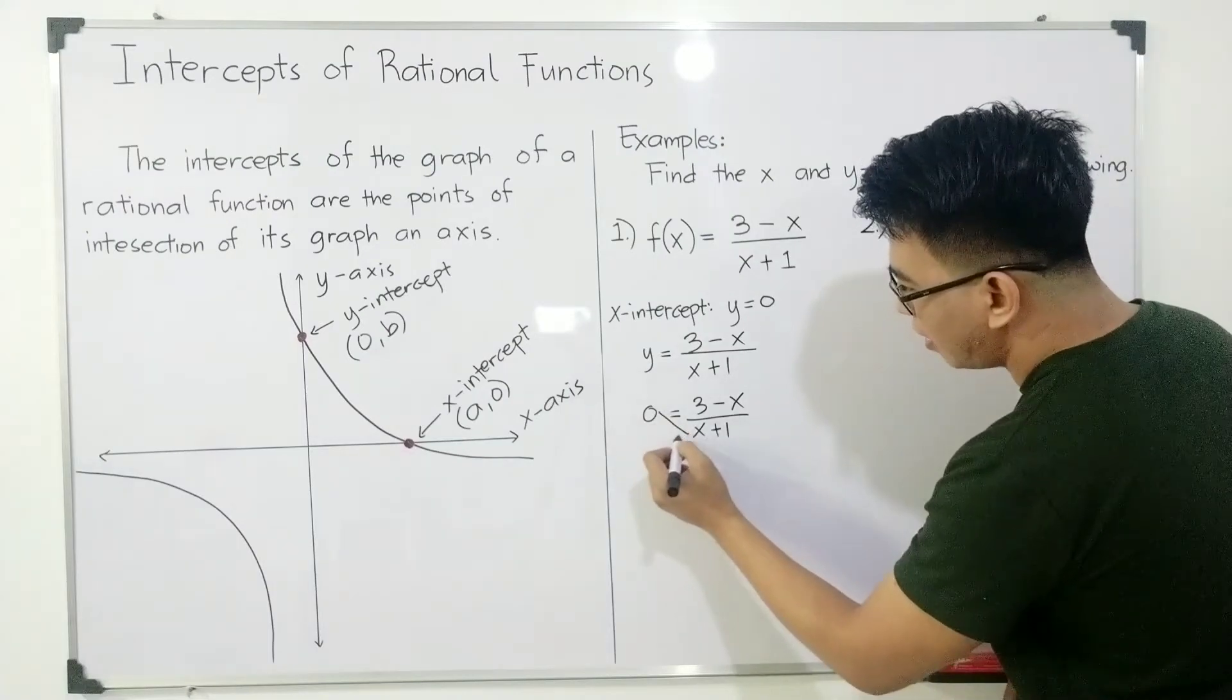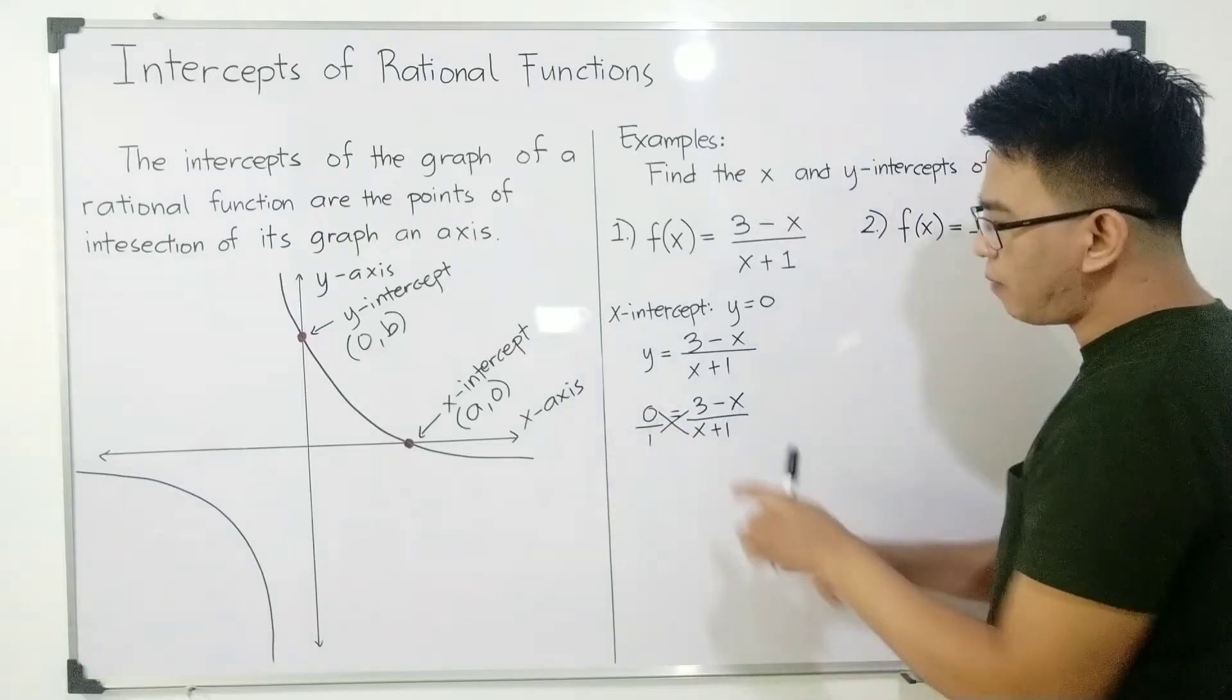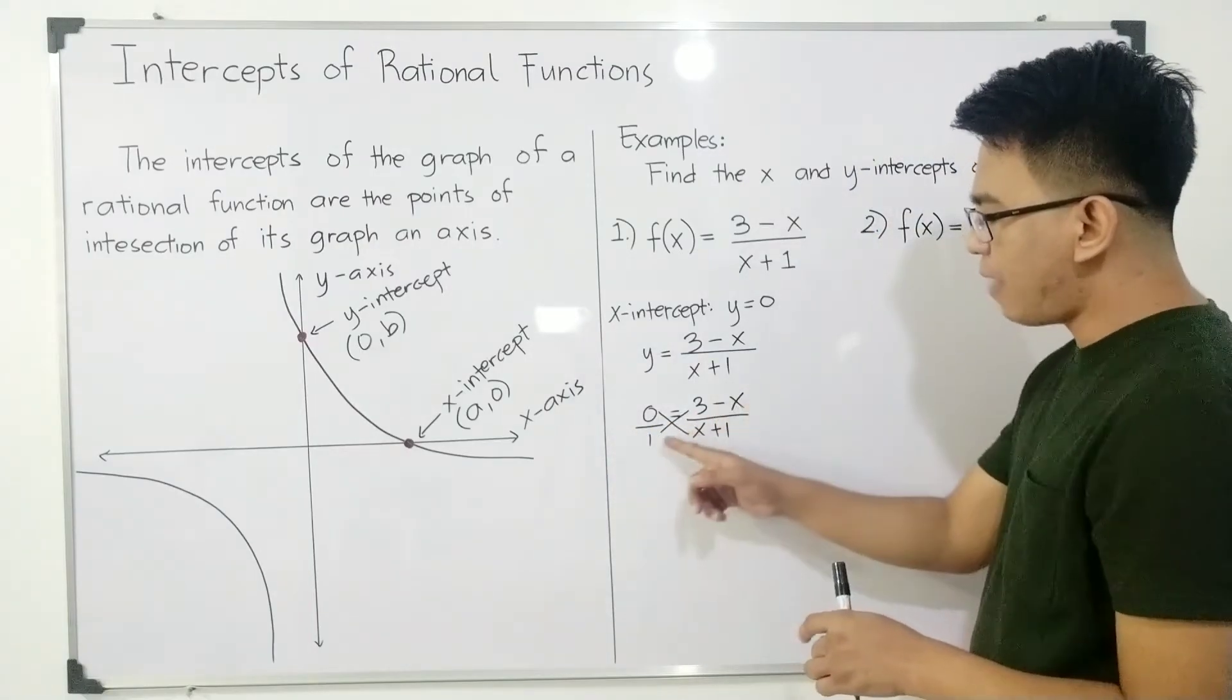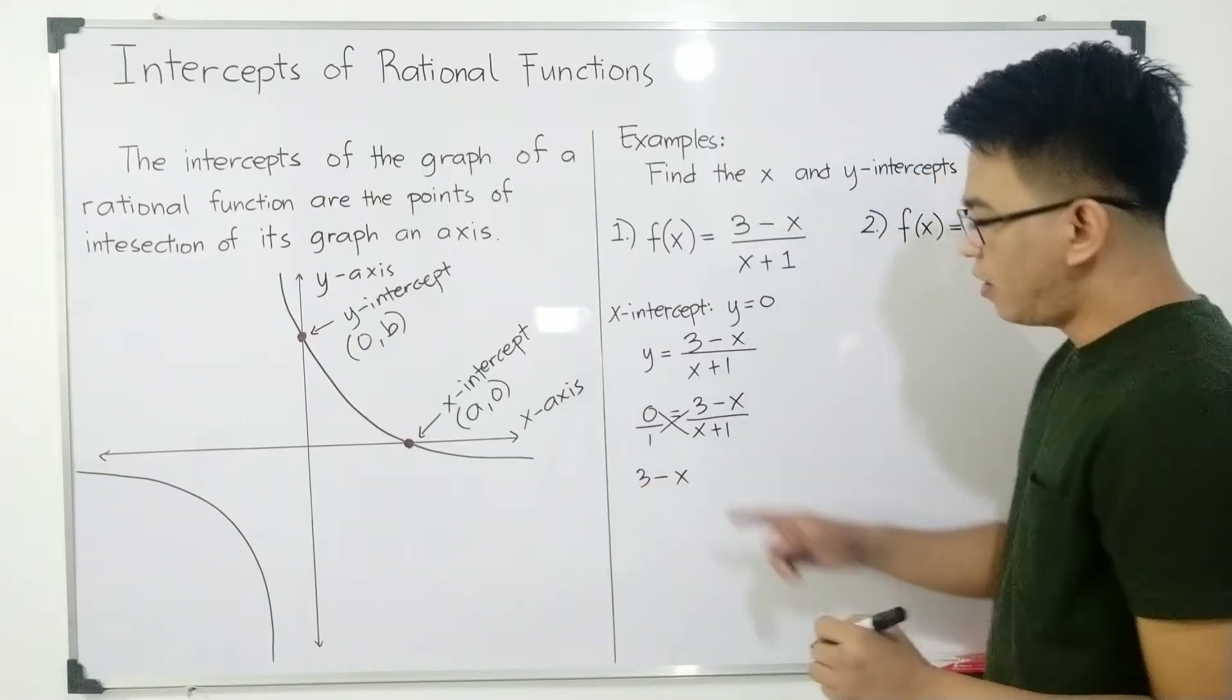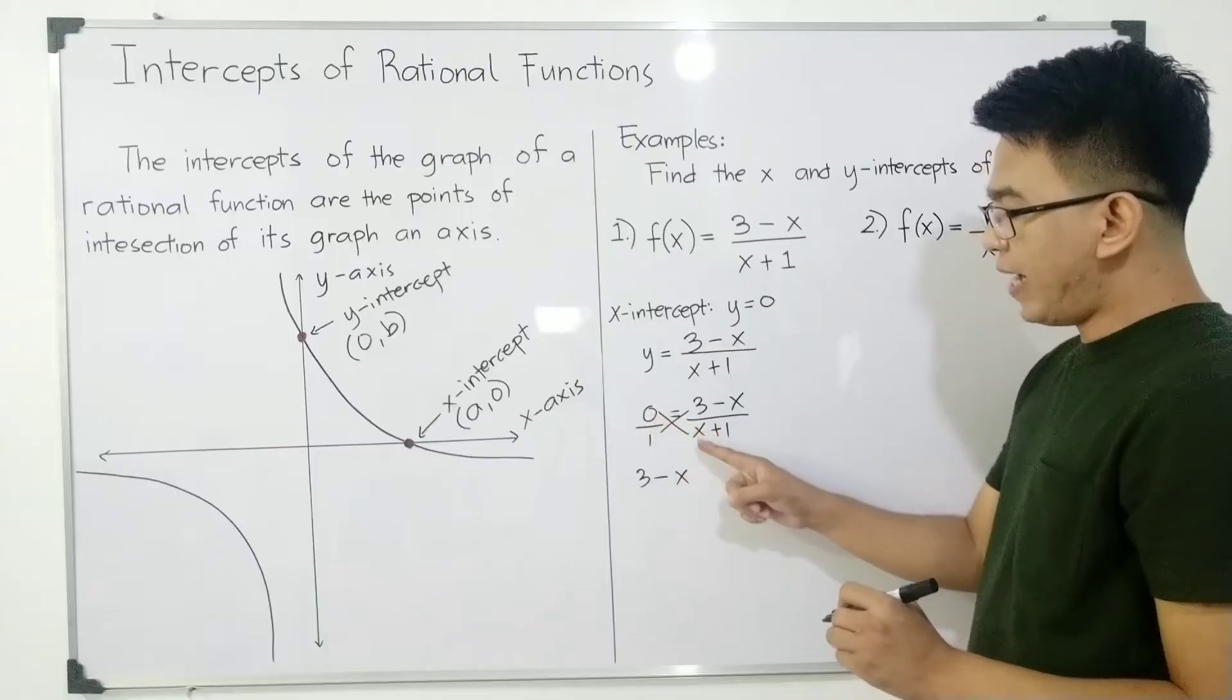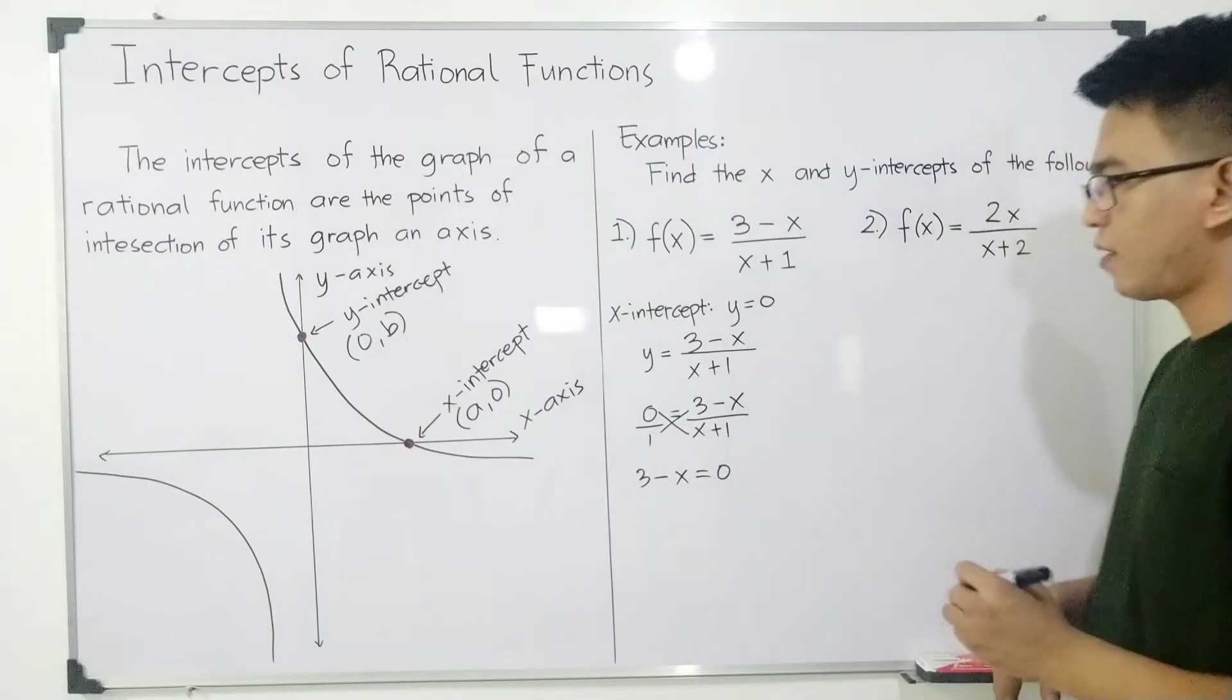Cross-multiply this. There's an invisible 1 here. So cross-multiply. When you multiply (3-x) times 1, it will become 3-x. And when you multiply 0 by (x+1), that is equal to 0.